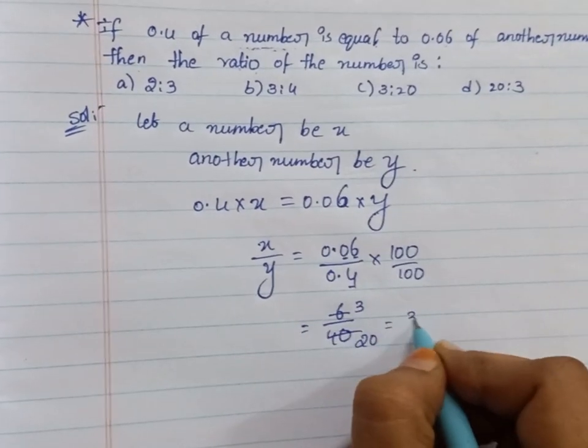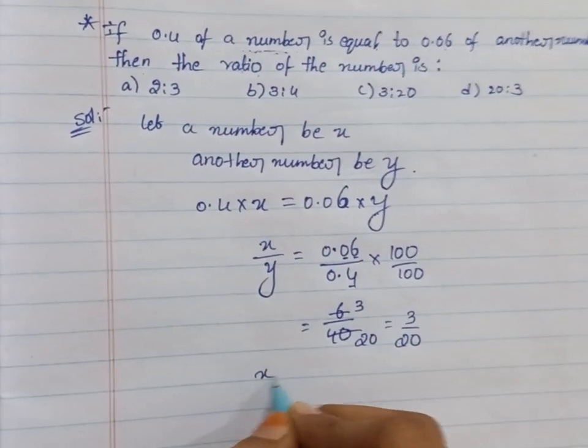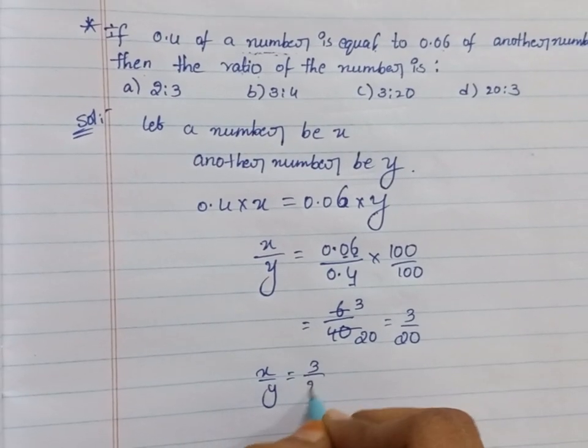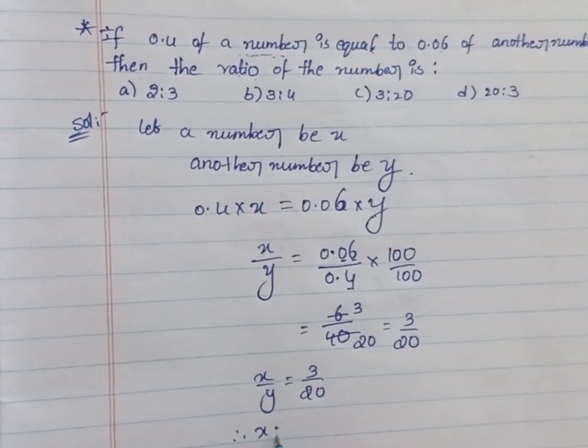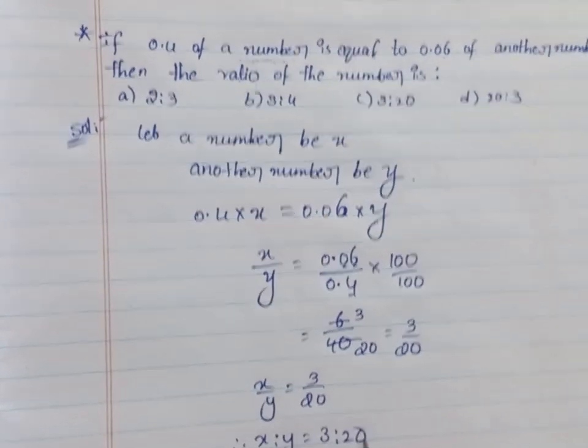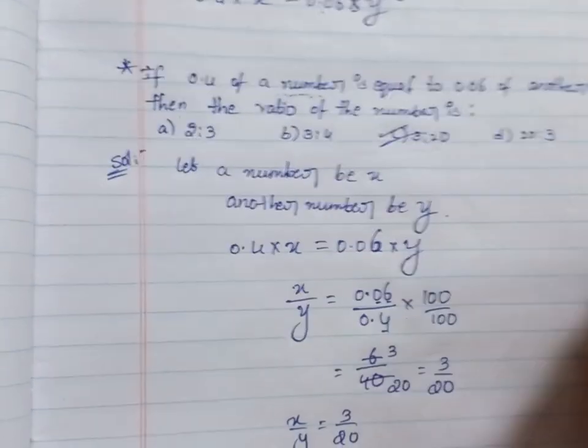Two threes, two twenties. So 3 by 20. x by y equals 3 by 20. Therefore, x is to y equals 3 is to 20. Option C is the correct answer.